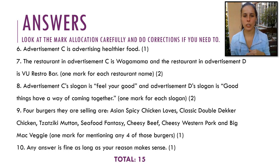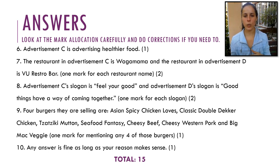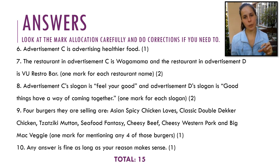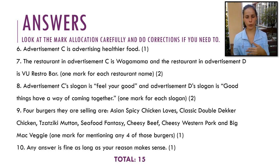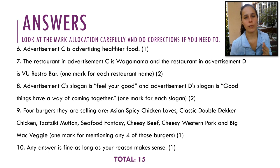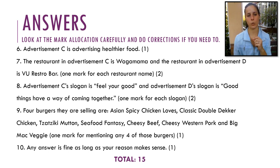Here are your next set of answers. Please put corrections if you need to — I'm going to move through it quite quickly, so pause if needed. Number six: Advertisement C is advertising healthier food. You can't just say Advertisement C — that is not a full sentence. You have to tell me what they are doing. That is one mark if you've got that right.